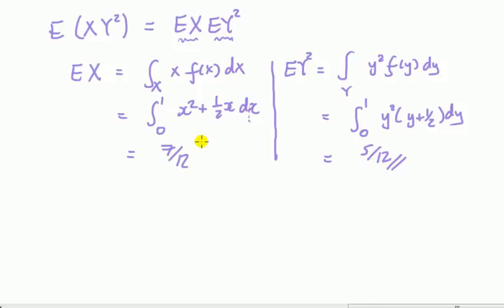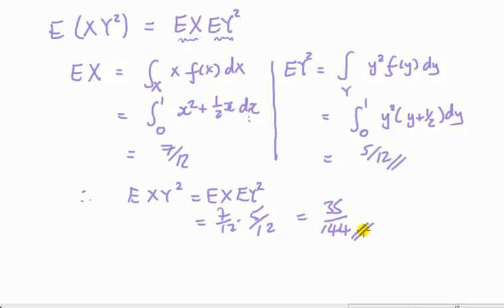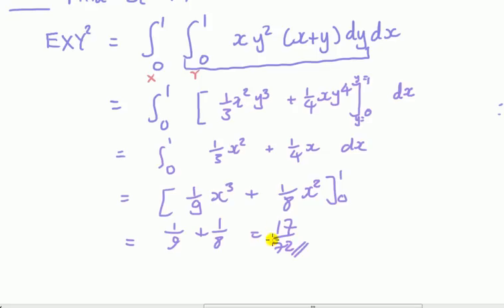So I have 5 over 12, so therefore you would say the expected value of x times y squared equals 7 over 12 times 5 over 12 equals 35 over 144. Is that the same as what I got before? No, it's not, because I've got 17 over 72. So which one is right?